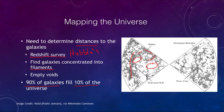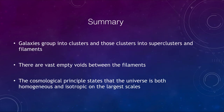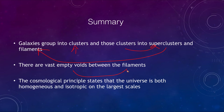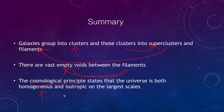In summary: galaxies group into clusters, those clusters group into superclusters, and superclusters group into filaments. Between those filaments there are great empty voids with hardly any galaxies. Those voids account for 90% of the volume but only 10% of the galaxies. We also looked at the cosmological principle, which says the universe is both homogeneous and isotropic — but only on the largest scales, not on small scales.